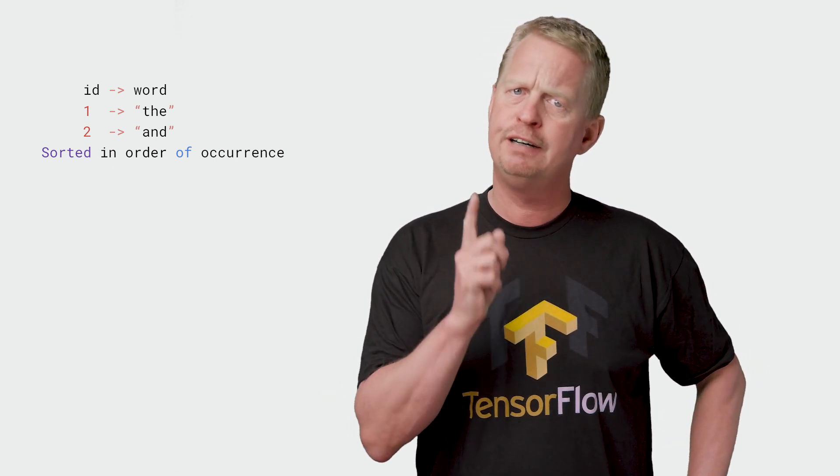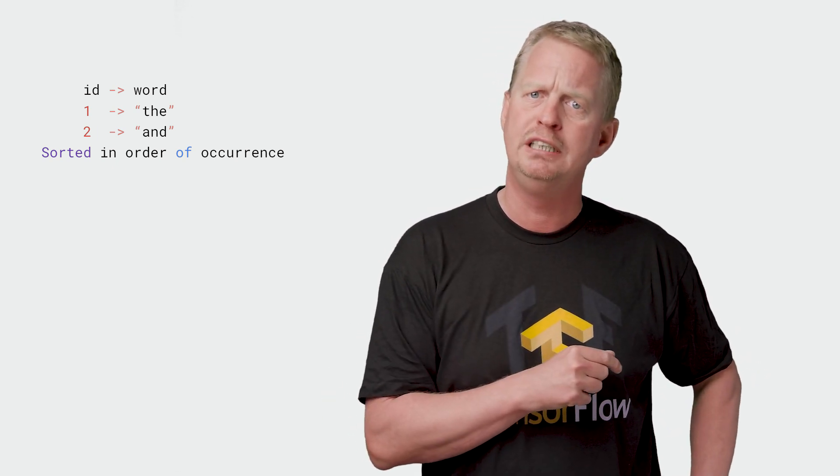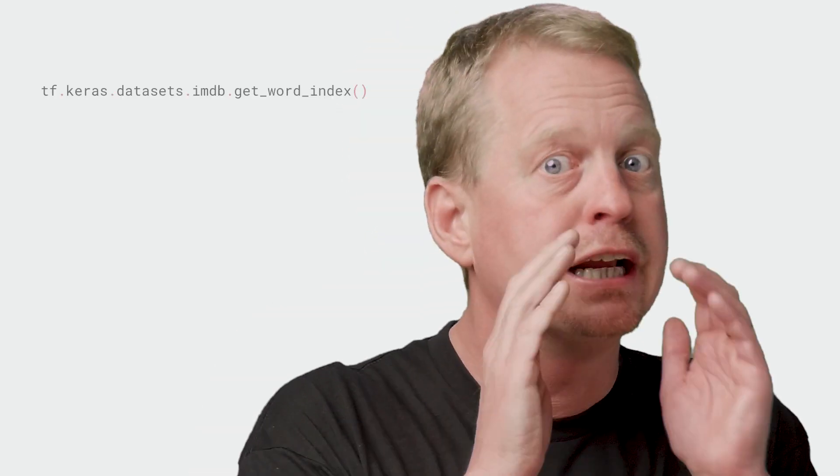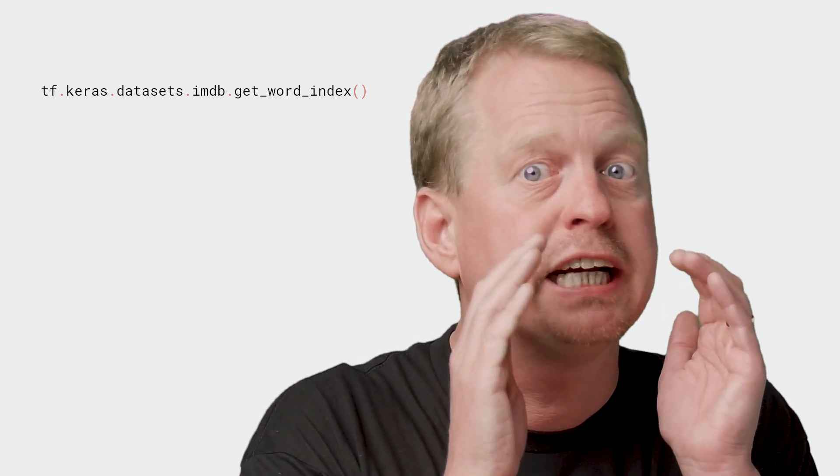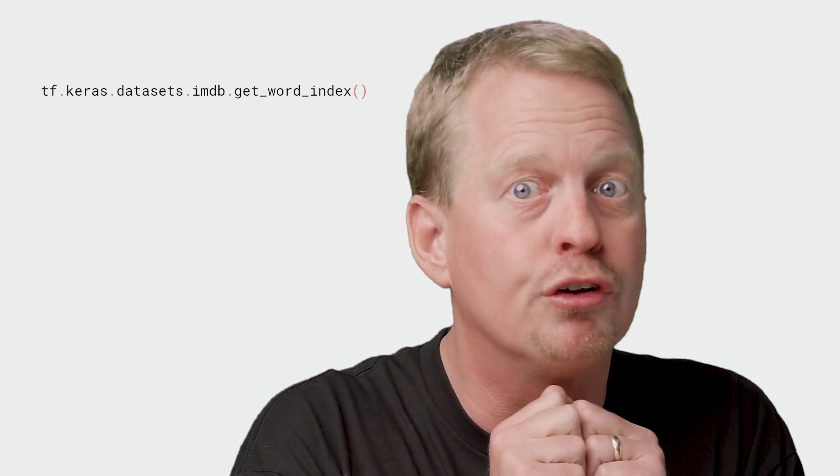And that's almost it for this episode. But I will give you a little bit of homework while waiting for the next part. Remember, I said that number one mapped to the word 'the', and two to 'and'. How did I find out that these numbers mapped to these words? As a hint, you should check out the following function. And as a second hint, you should check out the code in the text classification video also.